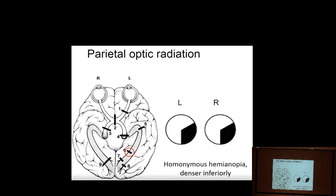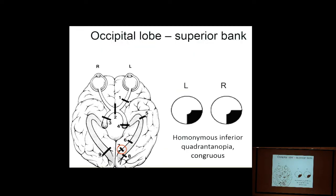A lesion further up in the parietal lobe tends to give a deficit a little bigger than a quadrant, because more optic radiations travel through the parietal lobe — it looks like an inferior quadrant anopsia. As we move back to the occipital lobe, everything is reversed: the upper part of the occipital lobe sees the lower visual fields. A stroke involving the more superior occipital lobe gives an inferior quadrant anopsia.